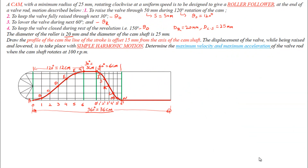Hello everyone, welcome to my channel. This is the same question of cam and follower motion with simple harmonic motion. The only difference in making the cam profile in this question is that the cam profile is made when the axis of the follower is offset by 15 mm from the axis of the cam shaft. In the previous question, the axis of the roller follower meets the axis of the cam shaft, but in this question the axes are offset by 15 mm.